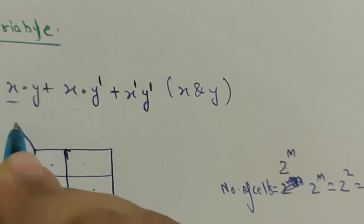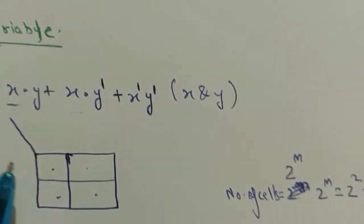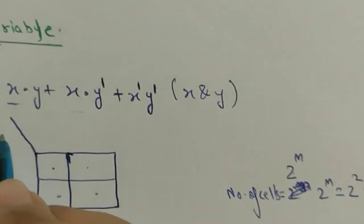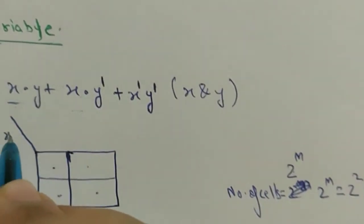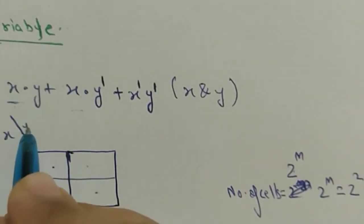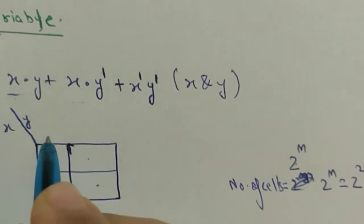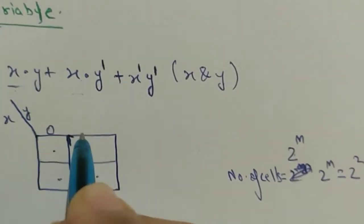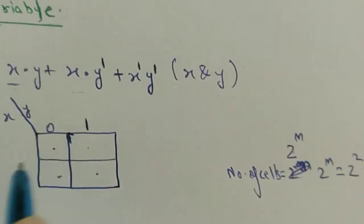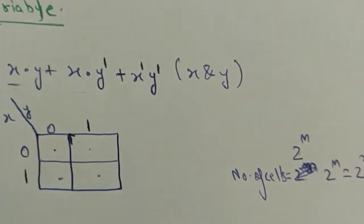Now drawing the table, you will draw a line here and write the two variables x and y. Then you will write 0 here, 1 here for the columns, and 0 here, 1 here for the rows.